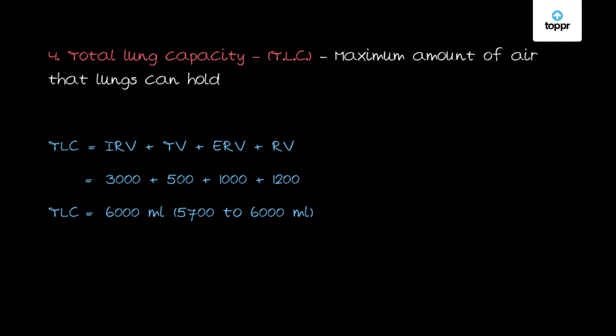We have seen two types of pulmonary measurements: pulmonary volumes, which are specific measured values, and pulmonary capacities, which are inferred volumes. All these terms are very important to remember and memorize. Pulmonary capacity and pulmonary volume together tell us about the total capacity or volume of the lungs, and understanding this helps us know how much air the lungs can hold.